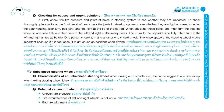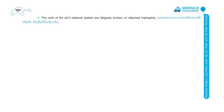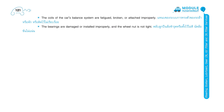Page 120. Unbalanced steering wheel. Characteristics: when driving on a smooth road, the car is dragged to one side except when holding the steering wheel tightly. Possible causes include: uneven tire pressure, tire circumference of left and right wheels is not equal, bad tire alignment, and coils of the car's balance system are fatigued, broken, or attached improperly. The bearings are damaged or installed improperly, and the wheel nut is not tight.